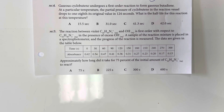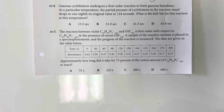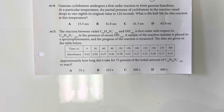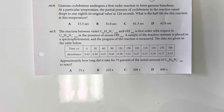Gaseous cyclobutane undergoes a first-order reaction to form gaseous butadiene at a particular temperature. The partial pressure of cyclobutane in the reaction vessel drops to one eighth of its original value after 124 seconds. What is the half-life of this reaction at this temperature?